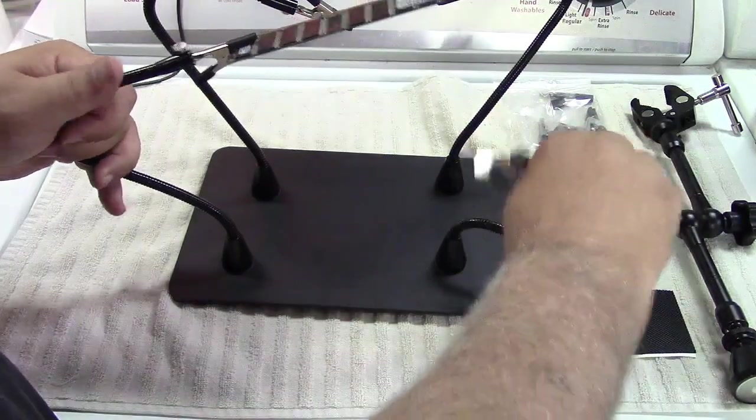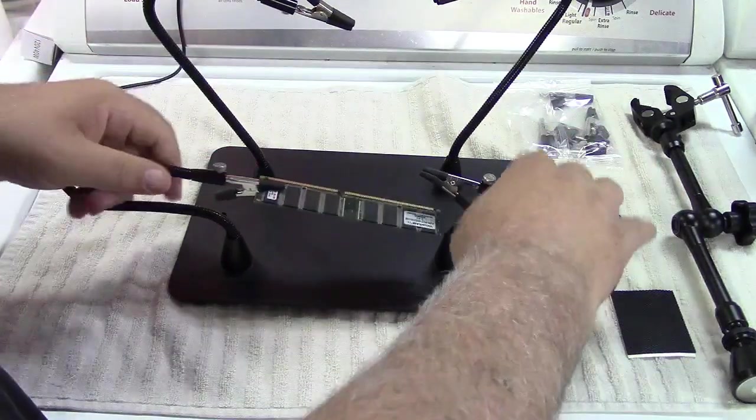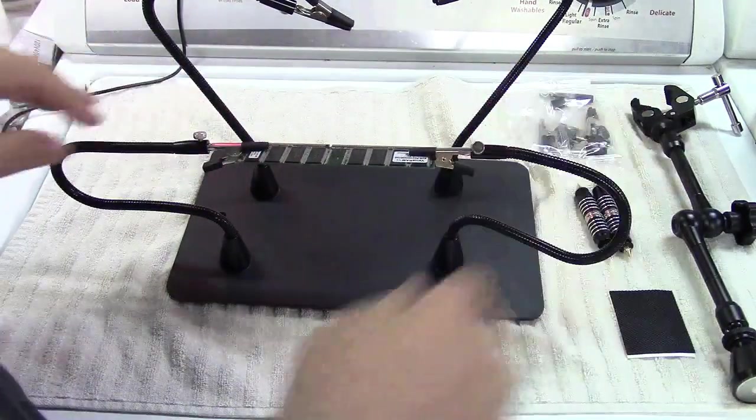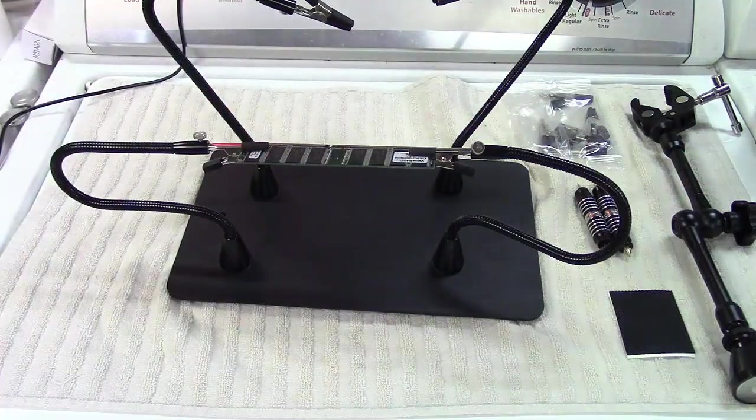And again, these can be bent. Whatever angle. If you want it closer to the bottom plate here, you can do that. Clip it in. That kind of stuff there.